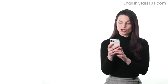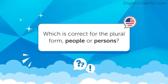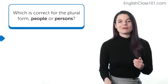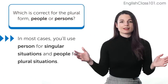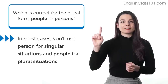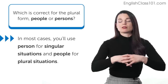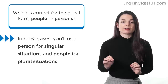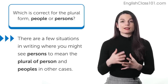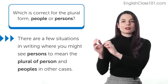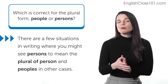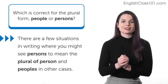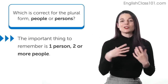Next question comes from Chitra. Chitra asks: 'people' and 'persons' — which one is correct for the plural form? Generally, in most cases, use 'one person' for a single person and 'two or more people' for multiple people. This will apply in the vast majority of situations. There are a few cases where you may see 'persons' in writing — typically in very legal, formal, or official writing like rules and contracts. We generally don't use 'persons' in everyday communication.